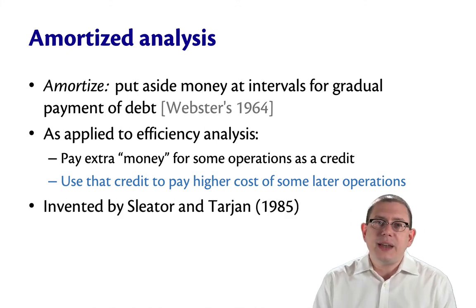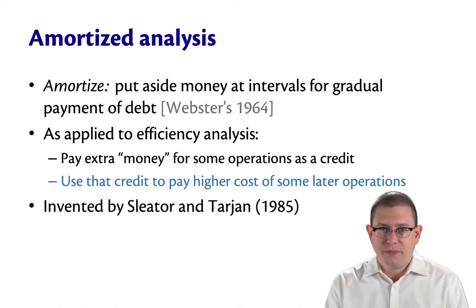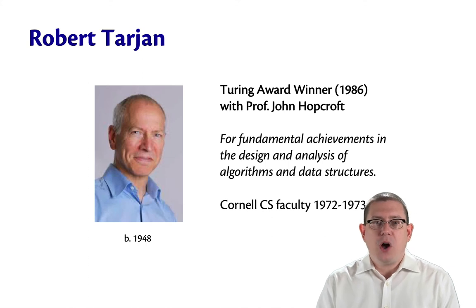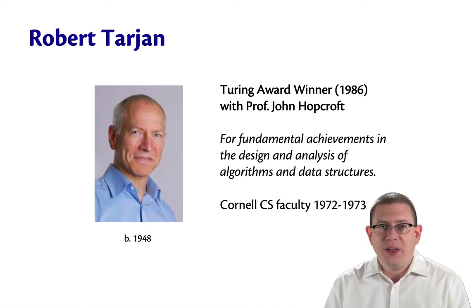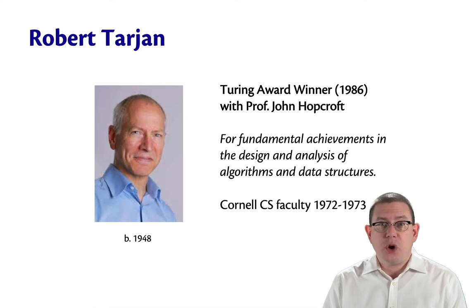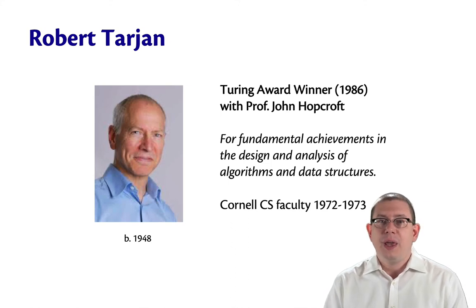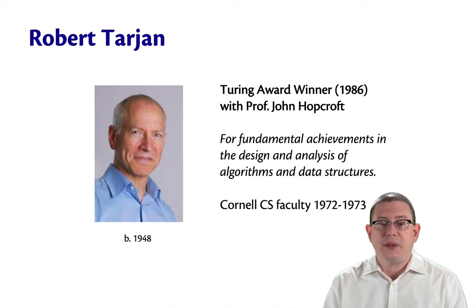This is an analysis technique that was invented in 1985 by Sleator and Tarjan. Bob Tarjan actually has a Cornell history — he won the Turing Award in 1986 with our own Professor John Hopcroft, who just recently retired. They won it together for fundamental achievements in the design and analysis of algorithms and data structures.